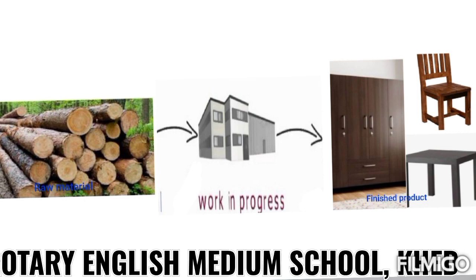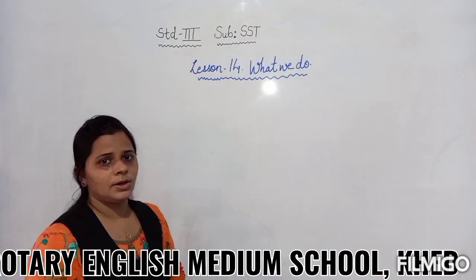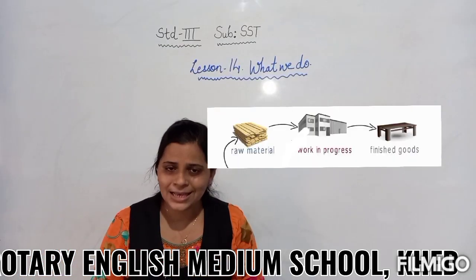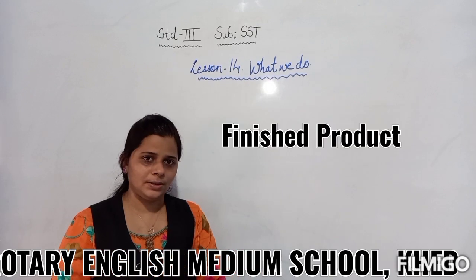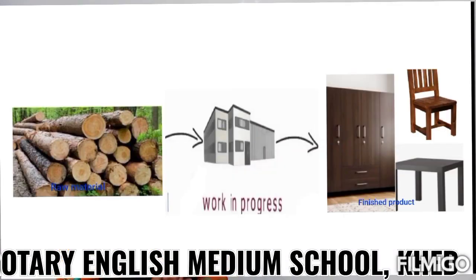You can see here in the image that from the wood — wood is a raw material — and then it goes to the processing unit, it goes for the making process, and after making process, it is completed as a finished product. So this is known as finished product.